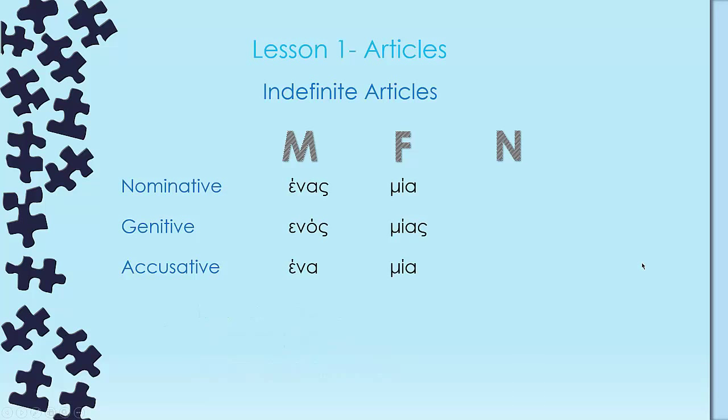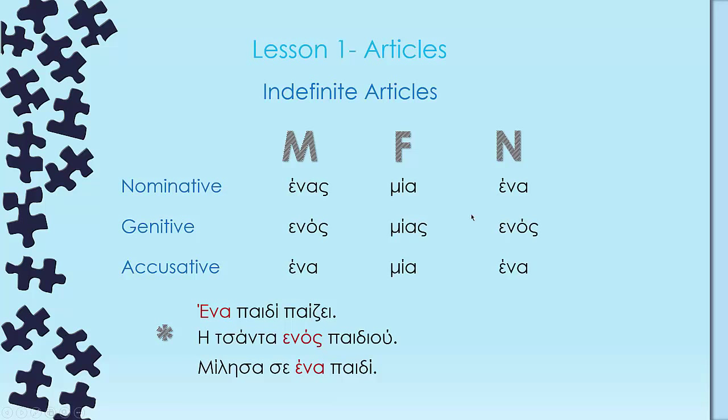Last but not least, the neuter nouns. We have ένα, ενός, ένα. As you can see, this is very similar to the male indefinite articles with the exception of nominative. You know, the ς is missing in neuter. So ένα παιδί παίζει, a kid plays. So ένα παιδί is in nominative, so we're going to use ένα. Η τσάντα ενός παιδιού, the bag of a child or kid. It doesn't really have any difference. So whose is the bag? It's the kid's bag, so it's genitive, ενός. Μίλησα σε ένα παιδί, I spoke to a child. Now child here is in accusative, it's the object of our sentence, so I'm going to use ένα.